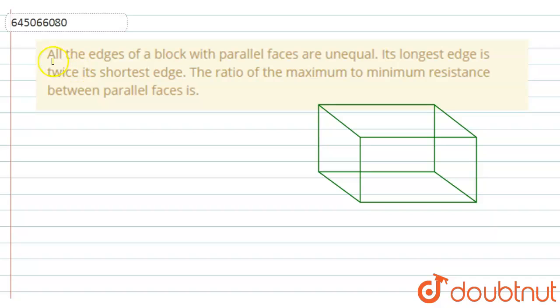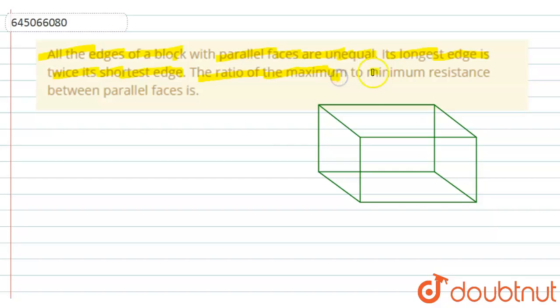The given question is: all the edges of a block with parallel faces are unequal. Its longest edge is twice its shortest edge. The ratio of the maximum to the minimum resistance between the parallel faces is?